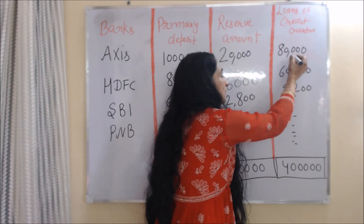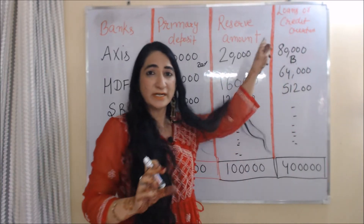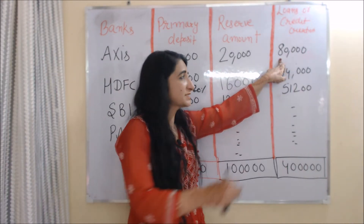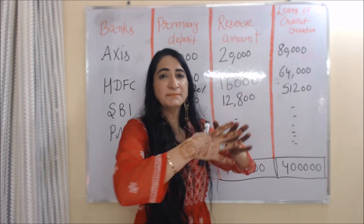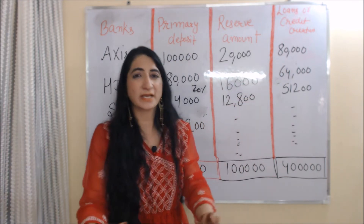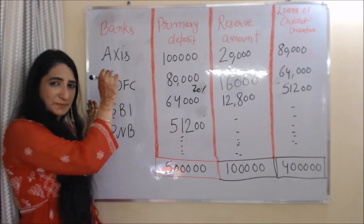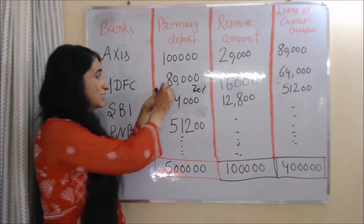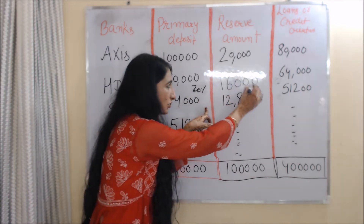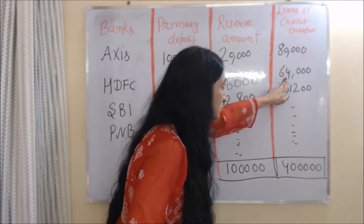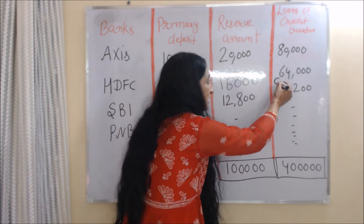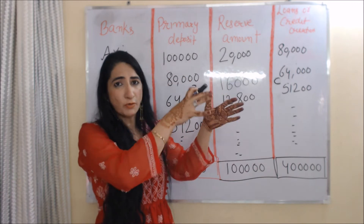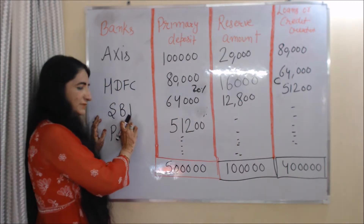Axis Bank gives a loan of 80,000 to Person B. Person B buys some goods and services with this 80,000 and pays this amount to a shopkeeper. The shopkeeper deposits this money in HDFC Bank. HDFC Bank keeps 20% as a reserve — 20% of 80,000 is 16,000 — and the remaining 64,000, HDFC Bank gives as a loan to Person C. Person C buys some furniture with this amount and pays the shopkeeper, who deposits the money in SBI Bank.